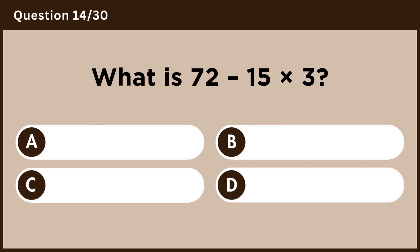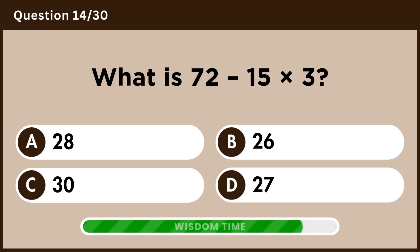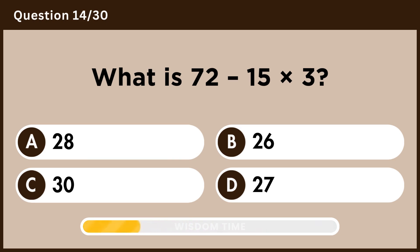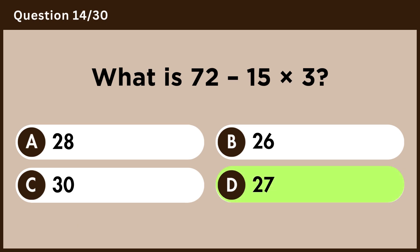What is 72 minus 15 times 3? Answer D, 27.